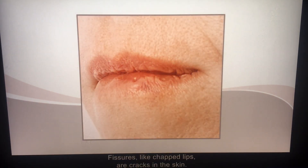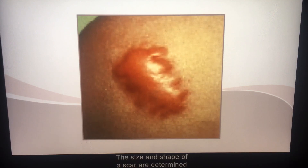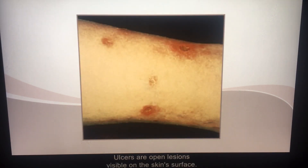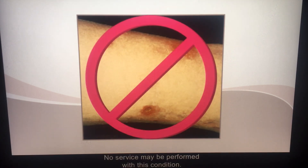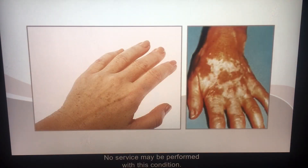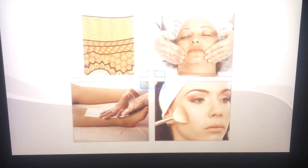Fissures, like chapped lips, are cracks in the skin that may be dry or moist. Scars are formations that result from a lesion; the size and shape of the scar are determined by the extent of the original injury. Ulcers are open lesions visible on the skin's surface; they may result in the loss of portions of the dermis and may be accompanied by pus. No service may be performed with this condition. Refer to your textbook for more information on the various skin disorders and diseases, including pigmentation abnormalities and disorders of the sebaceous and pseudoriferous glands.